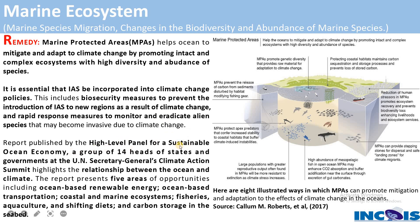A report from the High Level Panel for a Sustainable Ocean Economy — a group of 14 heads of state and governments — highlights the relationship between ocean and climate. It identifies five areas of opportunity: ocean-based renewable energy, ocean-based transportation, coastal and marine ecosystem protection, fisheries and aquaculture with shifting diets, and carbon storage in the seabed. These are possible remedies to control the causes and consequences of climate change affecting marine ecosystems.